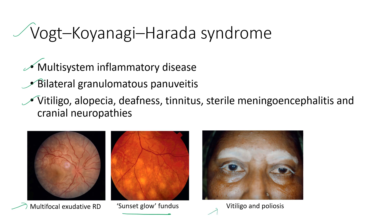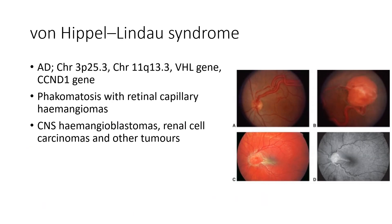This picture shows vitiligo and poliosis in a case of VKH disease. Next is von Hippel-Lindau syndrome. It is an autosomal dominant phacomatosis with retinal capillary hemangiomas. The systemic features include CNS hemangioblastomas, renal cell carcinomas, and other tumors.